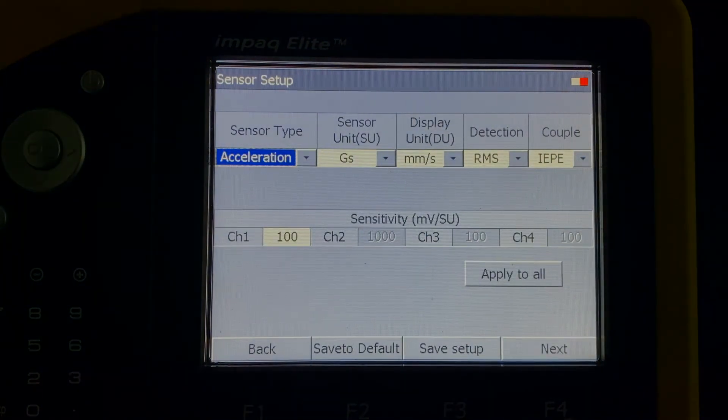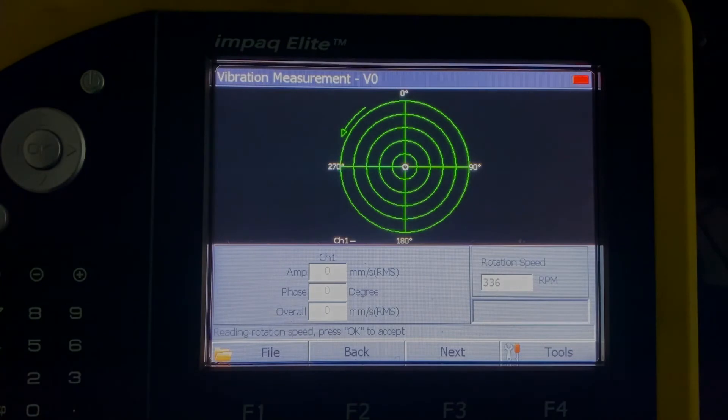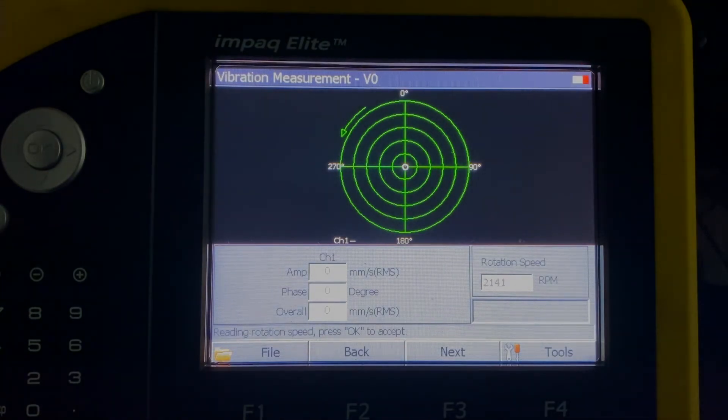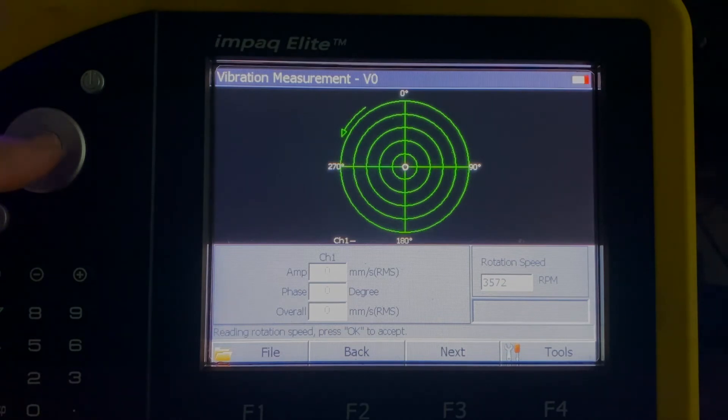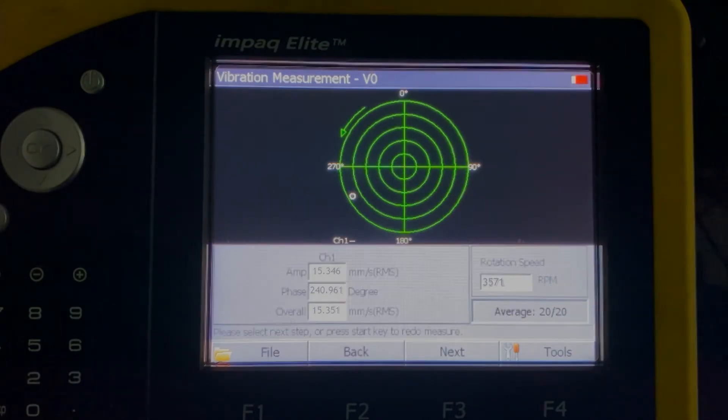Next we will go to the vibration measurement page. We will turn on the bench grinder, press the OK button to confirm the balancing speed, and in this case it will be around 3570 rpm. This will take about 20 times of average to complete this measurement. The initial vibration level is currently around 15 millimeters per second RMS with a phase angle of 240 degrees.